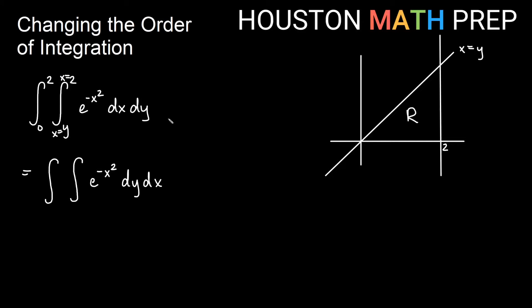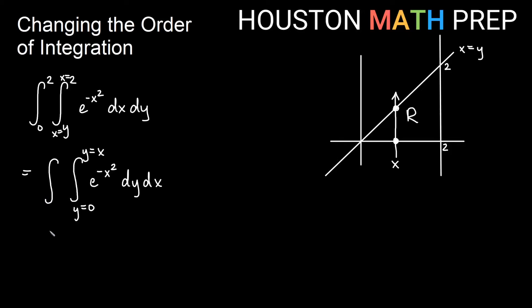This is from 0 to 2 in the y direction, so this is y equals 0 and this must be y equals 2 up here. Now what we want to do is think of this region in terms of dy dx order. We're going to fix an x and draw through in the y direction to change our order of integration. If I choose some x value and draw through in the y direction, I enter the region at the horizontal axis — that is y equals 0 — and then I exit the region through this diagonal line. I need to write it as y equals x instead of x equals y because I'm integrating dy.